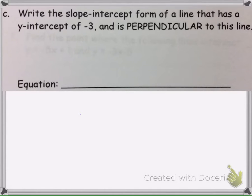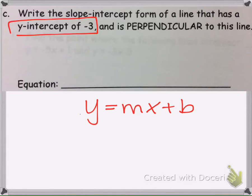Part C asks us to write the slope-intercept form, so y equals mx plus b, of a line that has a y-intercept of negative 3. So y equals mx plus b. It said that the y-intercept is negative 3. So that means our b here, they tell us, is negative 3.